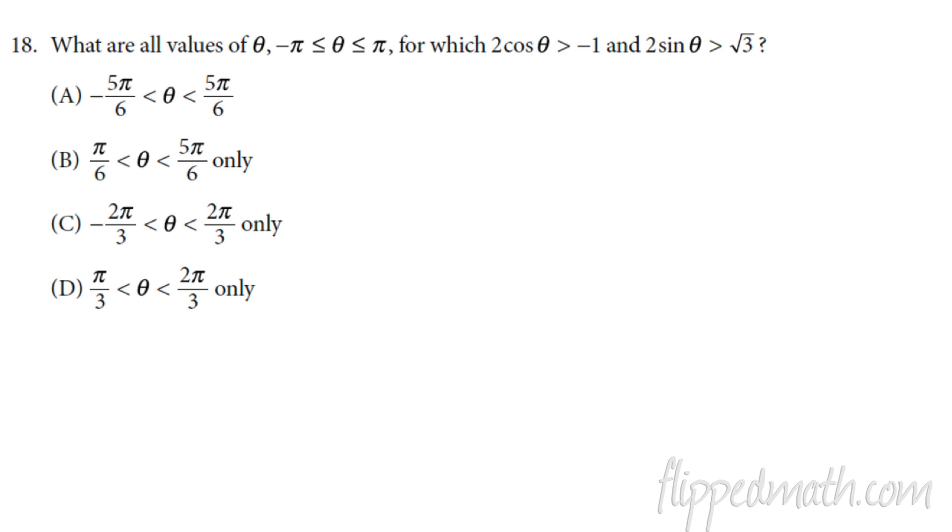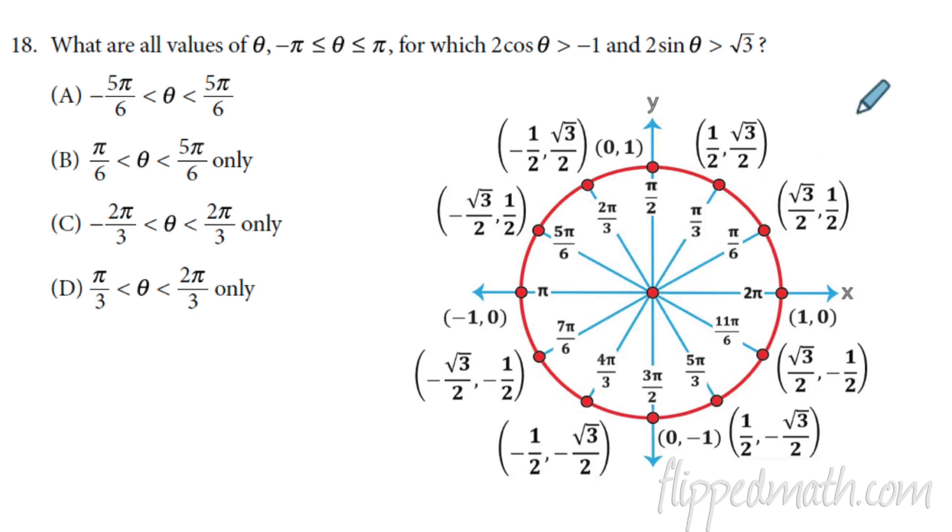I don't think I'm making my 10 minutes, but we're pretty close. I'm at 18 right now. What are all the values of theta from negative pi to pi such that two cosine theta greater than negative one half and two sine of theta is greater than radical three. This is obviously what are we going to use? We're going to use a unit circle right here. I'm going to solve each one of these equations. So when we solve that, we get that the cosine of theta has to be greater than negative one half and the sine of theta needs to be greater than radical three over two.